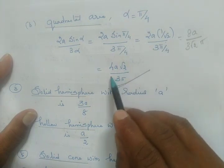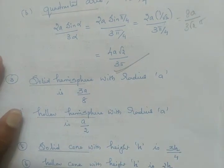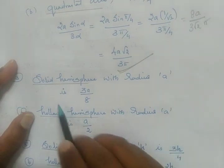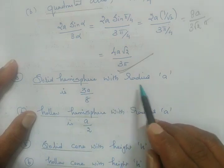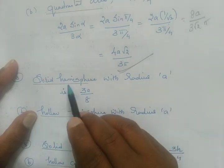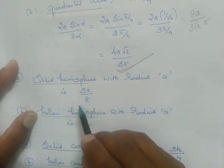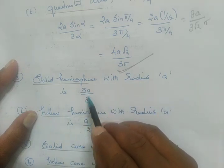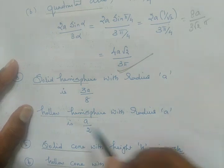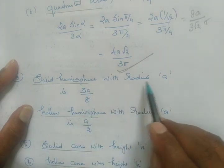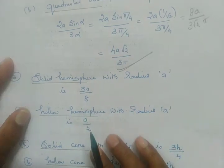The result for the quarter circle area is 4a√2/3π. In the standard results, next: solid hemisphere with radius a, whose center of gravity is 3a/8.